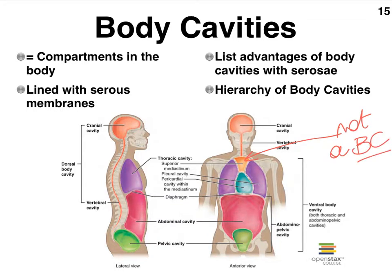The abdominal pelvic cavity has two smaller cavities: the abdominal cavity, which is the larger one and holds most of your digestive structures, and the pelvic cavity, which holds most of the internal reproductive structures — such as the ovaries and uterus in the female, and the tubes that guide sperm in the male.